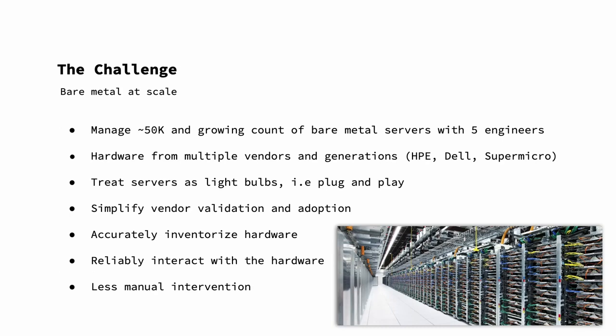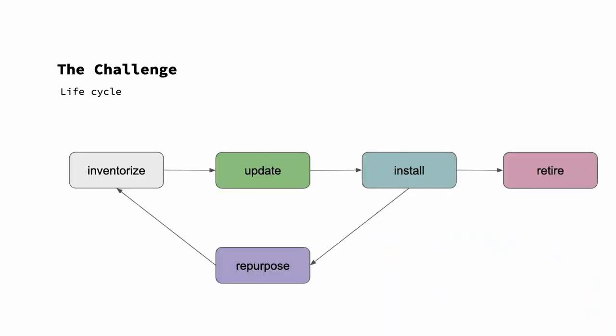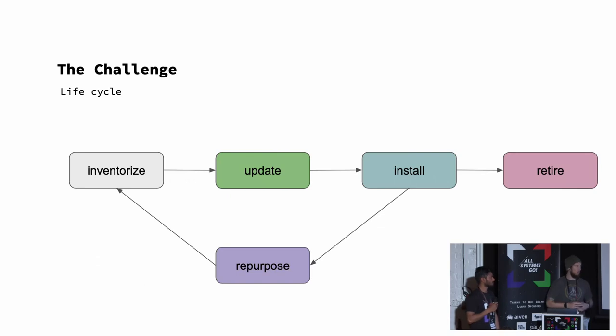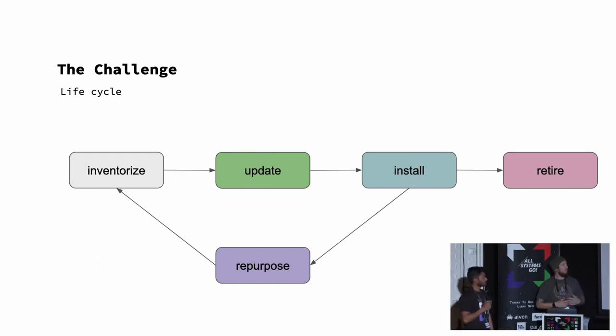Treating servers as light bulbs means that if something fails, we don't want to spend more than 10 minutes looking at it. The failure rate of hardware in a data center in the first year is 5%, so with that many servers, you have a lot of hardware failing. If it fails, put it in the broken bucket and take care of it later. The lifecycle is: receive hardware, inventorize it, keep firmware up to date, install, use, repurpose after X days, and retire after three to five years.